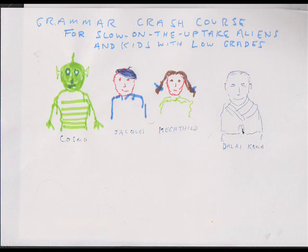So here we have Cosmo from somewhere in outer space — he's having trouble with the immigration authorities as a resident alien. We have Jacques from France, and we have Mechthild from Germany: Freut mich sehr eure Bekanntschaft zu machen. And the Dalai Karma, who just wants to learn more English.